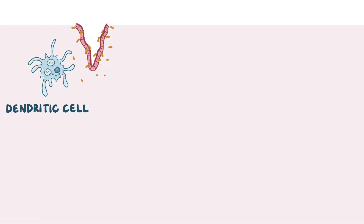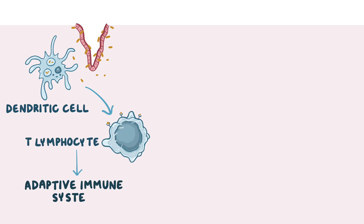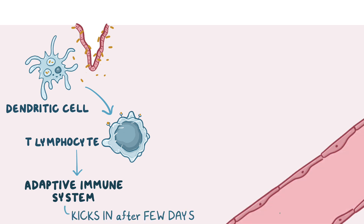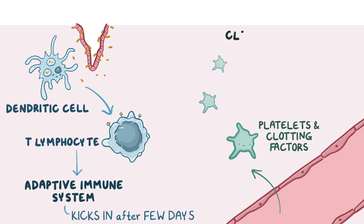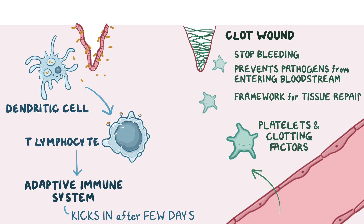All the while, dendritic cells continue to phagocytose pathogens and present bits of them to T lymphocytes, activating the adaptive immune system, which kicks in after a few days. If the stimulus was a cut or scrape, then platelets and clotting factors from the plasma reach the area and clot the wound. This helps stop the bleeding, prevents pathogens from entering the bloodstream, and provides a framework for tissue repair.